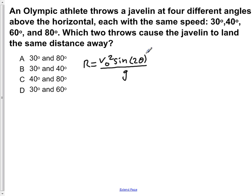So the thing that is going to determine whether the horizontal ranges are the same or not is the sine of 2 theta being the same. So we're going to calculate the sine of 2 theta for each of these four angles and see which ones are the same.